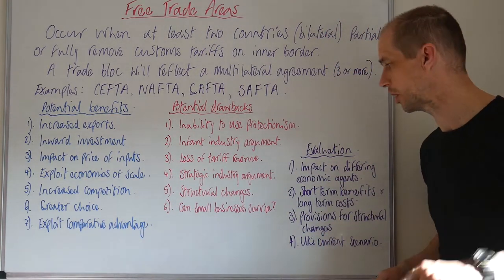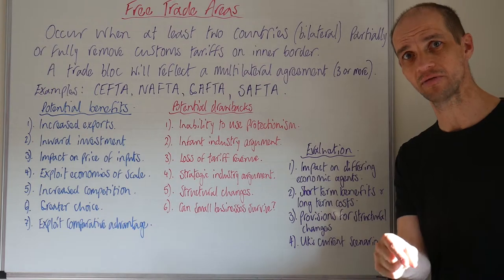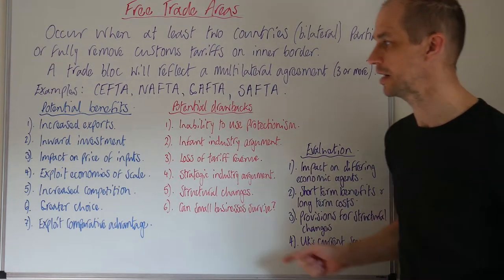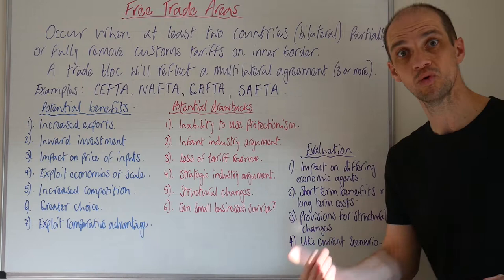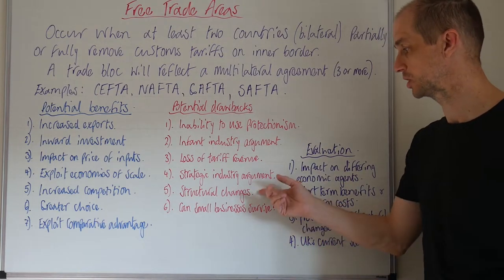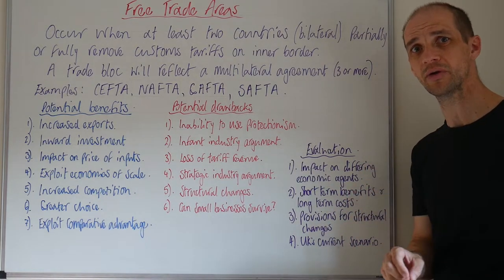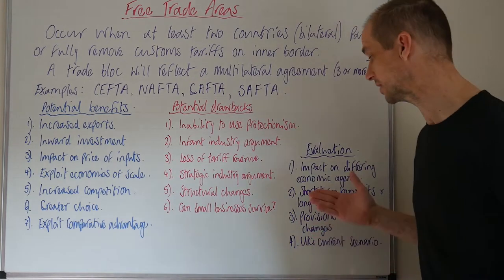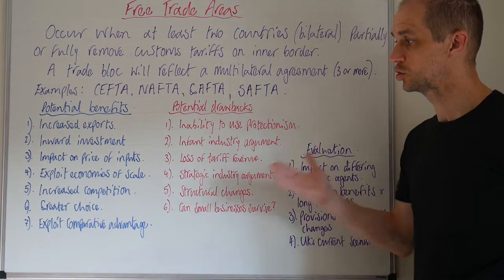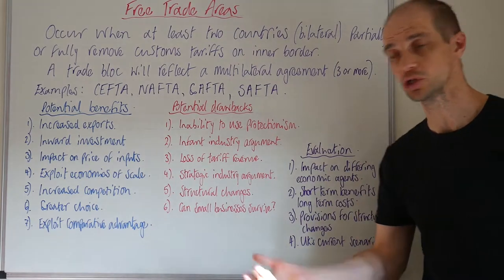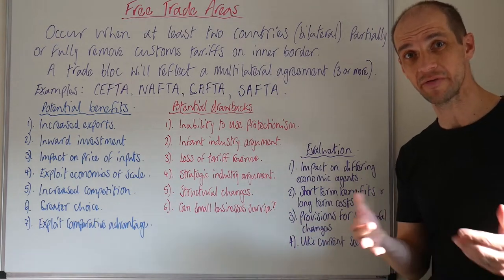Let's round this up. What about the impact on differing economic agents? You can break that down for the consumer-based impact, and we've talked about the price of inputs on home firm manufacturers — will that actually make them more competitive rather than causing structural unemployment? It depends. You can really target specific areas and you get a lot of marks for that detail. What about short-term benefits versus longer-term costs? The short-term benefits might be increased competition, greater choice, better quality, lower prices — but in the longer term those structural changes can be very painful.